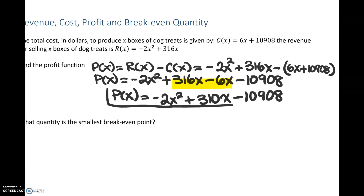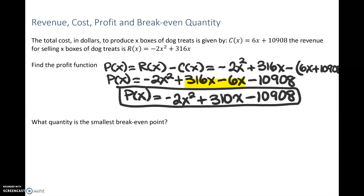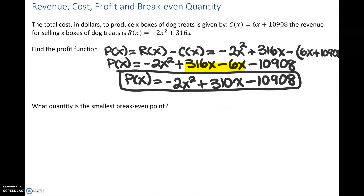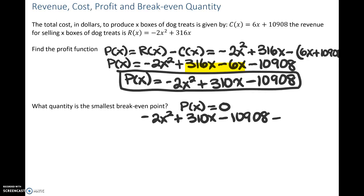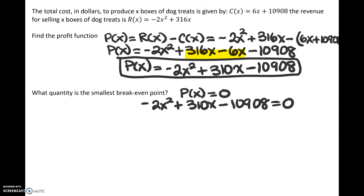Here's our profit function. Now it would like us to find what quantity is the smallest breakeven point. Breakeven is when your profit equals zero. So we take our profit function and set it equal to zero: negative 2x squared plus 310x minus 10,908 equals zero, and then we solve for x. We could factor or jump right into the quadratic formula, but first I recommend cleaning this up since there is a common factor with all these terms.